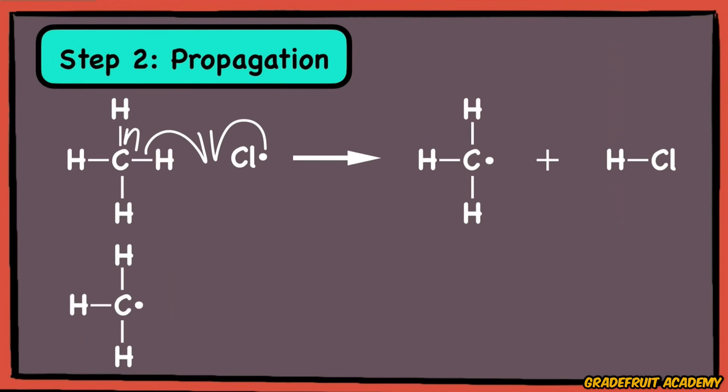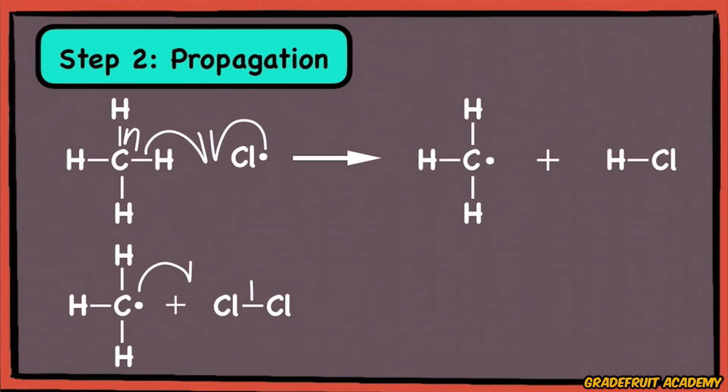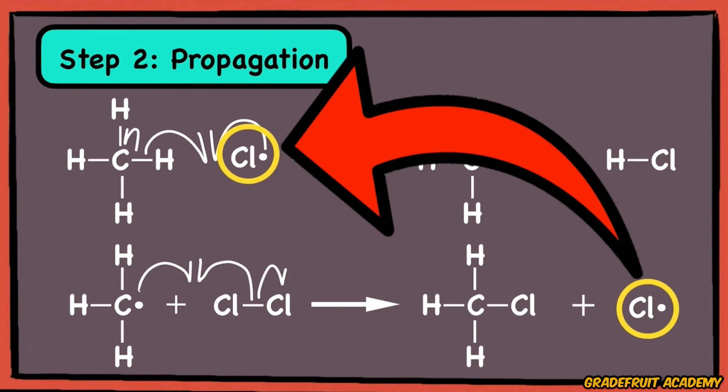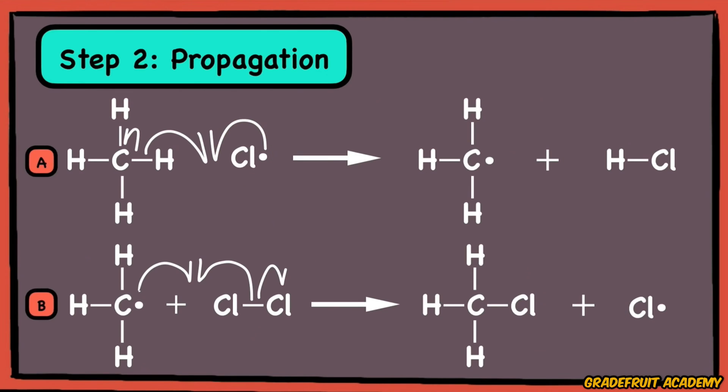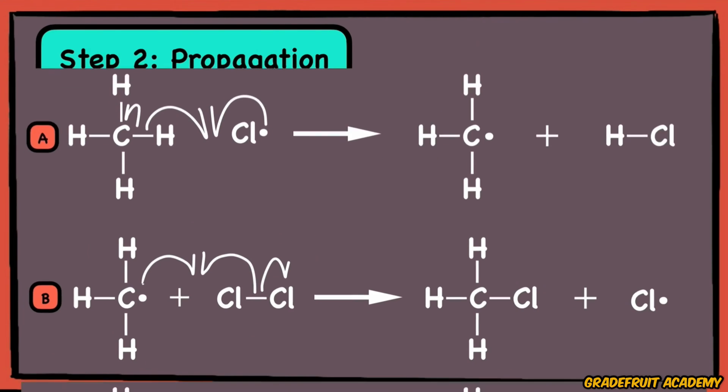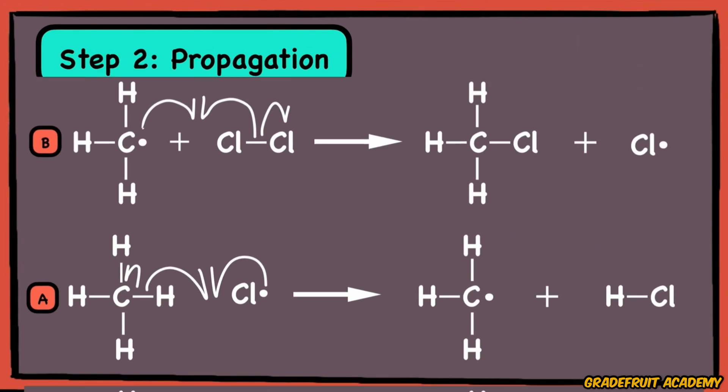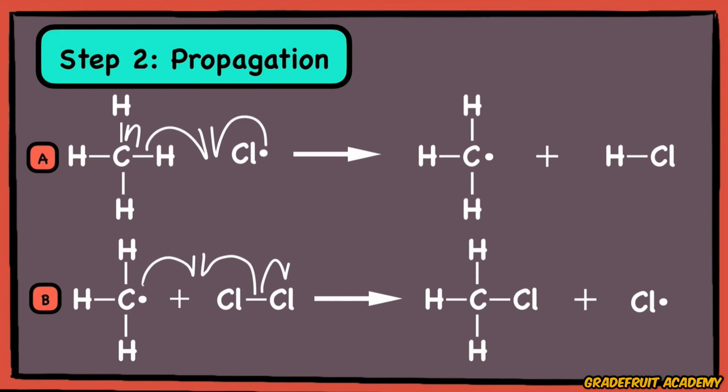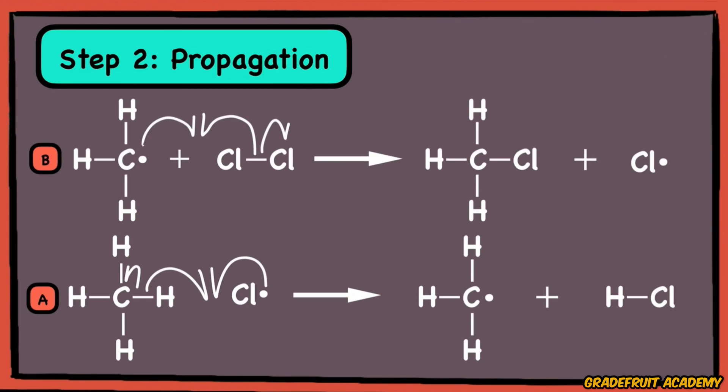Next, the methyl radical will react with a stable chlorine molecule, abstracting a chlorine atom in the same way like this, forming a chloromethane and regenerating the chlorine radical. This chlorine radical can then react with another methane molecule and the whole propagation process is repeated infinitely. That's why free radical substitution is also known as a chain reaction.